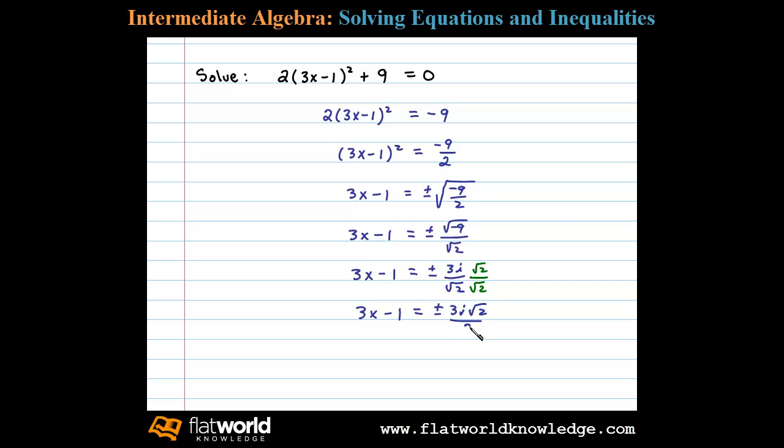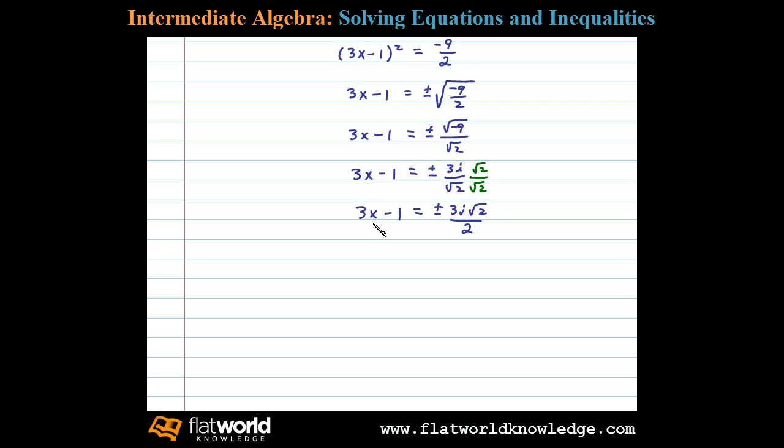Now at this point we solve for x, so we'll begin by adding 1 to both sides. That'll leave us with 3x equals 1 plus or minus 3i times the square root of 2 over 2.